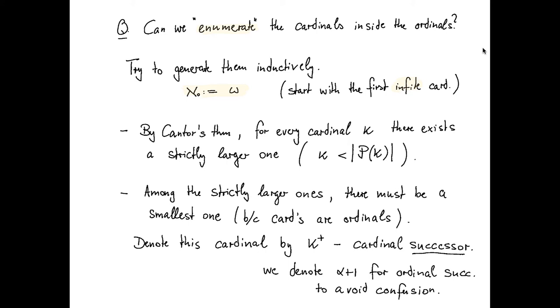So let's start with the least infinite ordinal omega; we call that aleph zero. Now by Cantor's theorem, for every cardinal kappa, there exists a strictly larger one. So we know that kappa is strictly less than the cardinality of the power set of kappa. Now, among the strictly larger ones, there must be a smallest one, because cardinals are ordinals, and let's denote this cardinal by kappa plus, the cardinal successor.